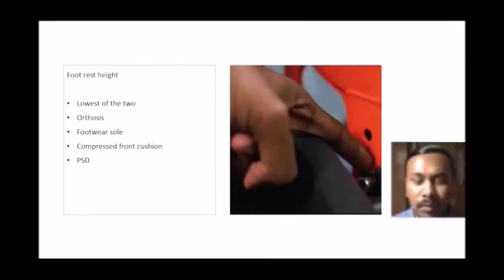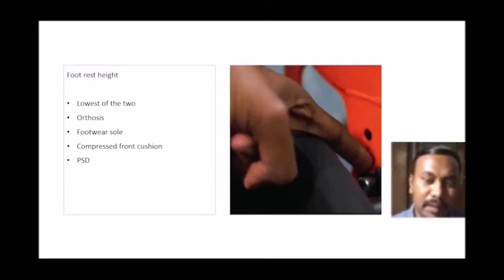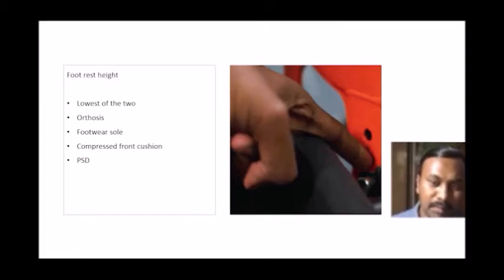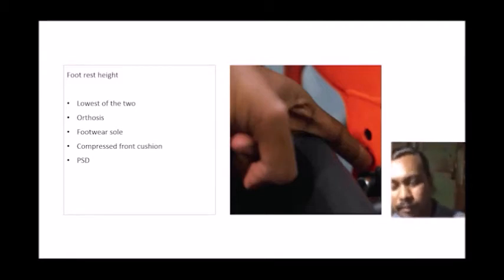We must also consider the compressed height of the front portion of the cushion. When taking measurements without the person sitting on the cushion and then introducing the cushion, the cushion compresses and the legs can end up hanging — that should not happen. Subtract the compressed cushion height from the leg measurement. Additionally, if someone uses a partial support device on the feet, such as an inversion or plantar flexion correction device, add that measurement to the leg height.